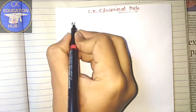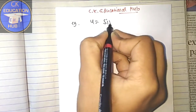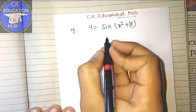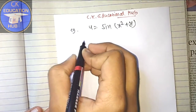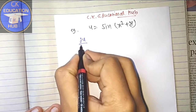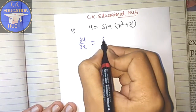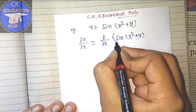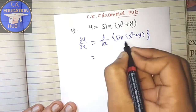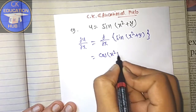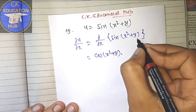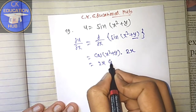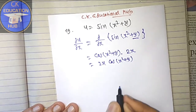Now again we will take an example: u = sin(x² + y). When we differentiate it partially with respect to x, then del u / del x = del/del x of sin(x² + y). By chain rule, the derivative of sin is cos, giving cos(x² + y), and we consider y as a constant, so the derivative of x² is 2x.